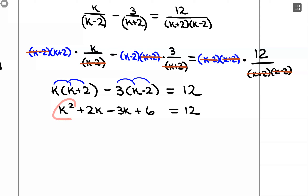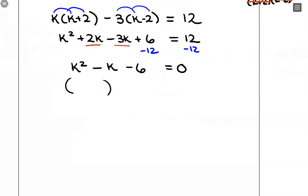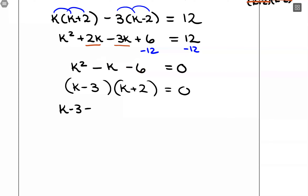I can see this is going to be quadratic. I want 0 on one side, so I subtract 12 from both sides and combine like terms: positive 2k and negative 3k gives negative k, and positive 6 minus 12 gives negative 6, so k squared minus k minus 6 equals 0. Factoring, that gives (k minus 3)(k plus 2) equals 0, since negative 3 and positive 2 multiply to negative 6 and add to negative 1. Separating into two possible solutions: k minus 3 equals 0 or k plus 2 equals 0, giving k equals 3 or k equals negative 2.